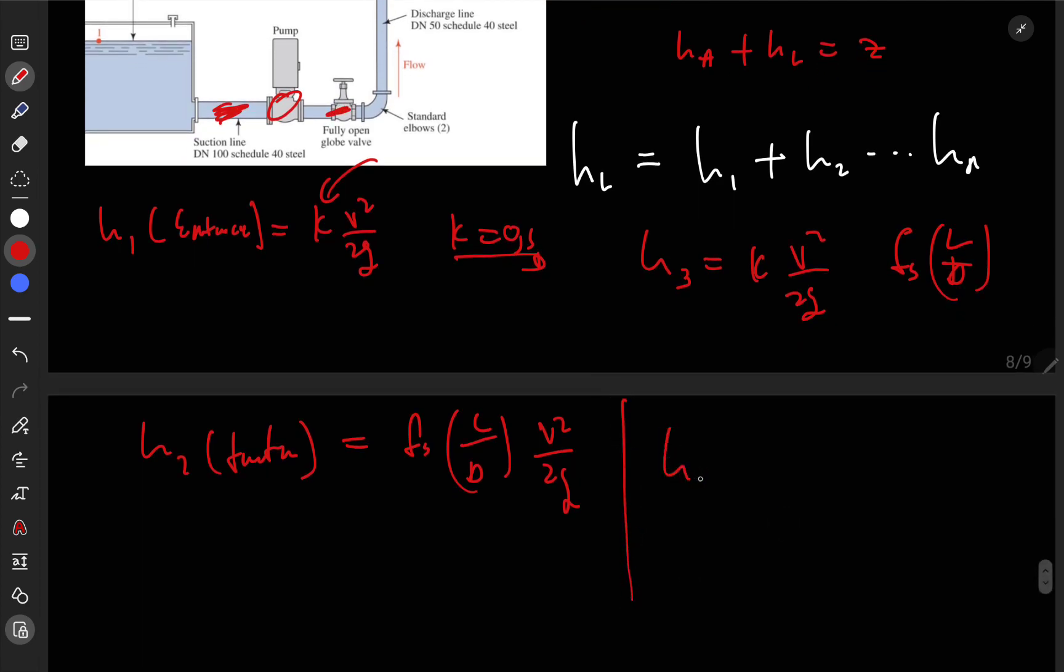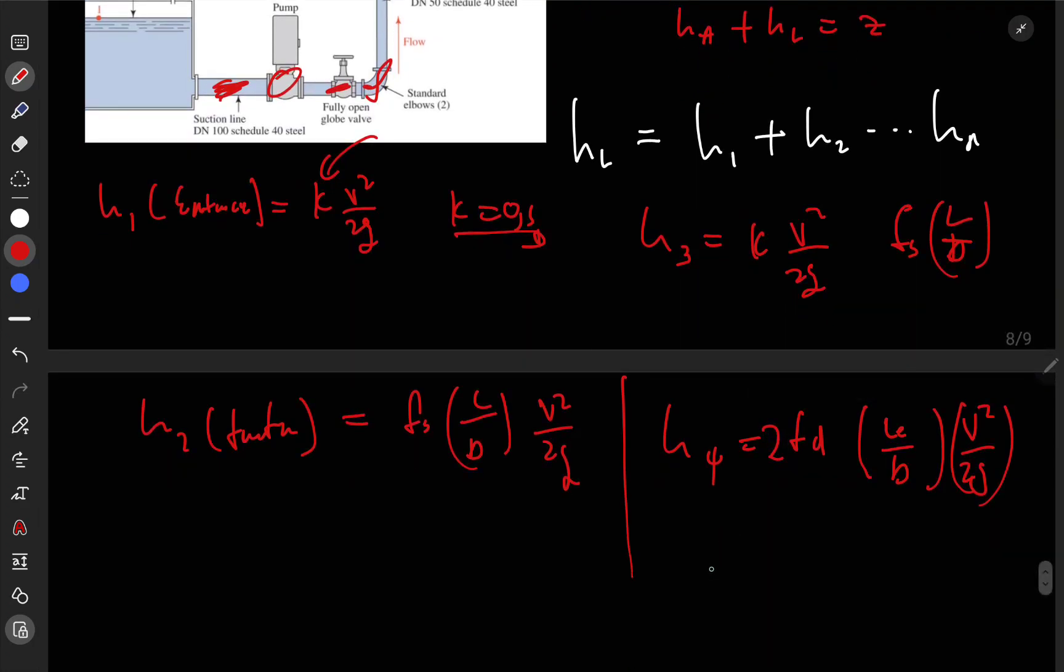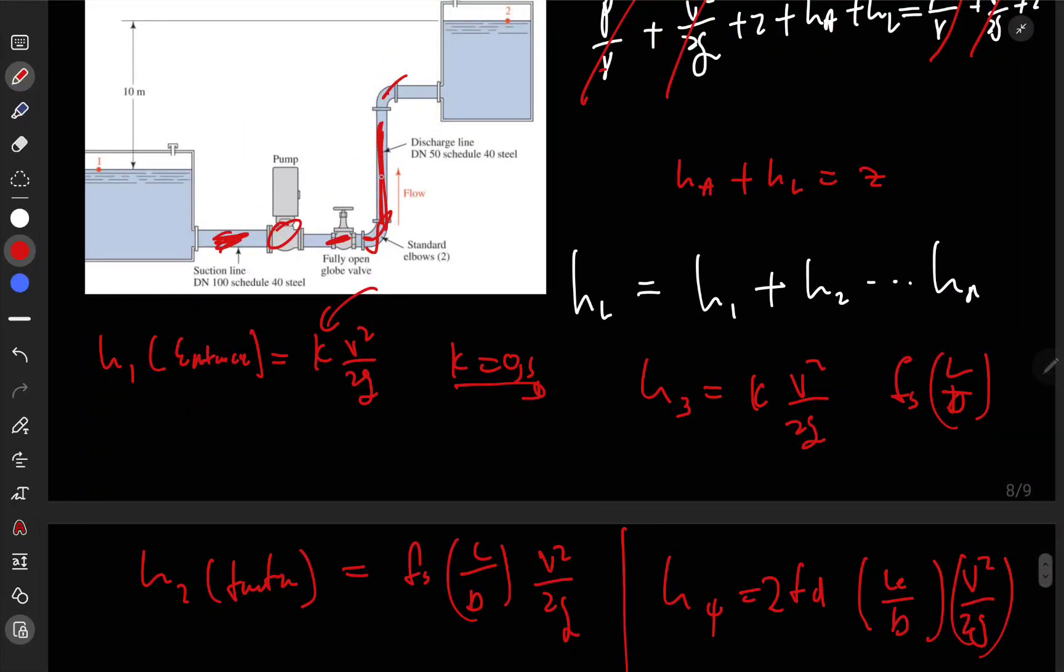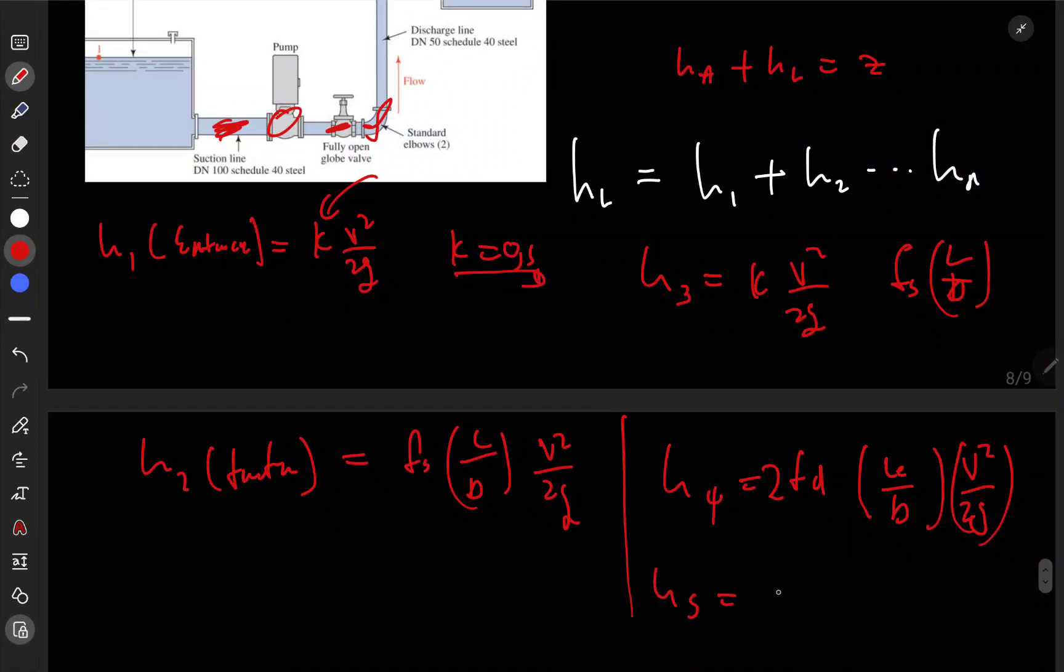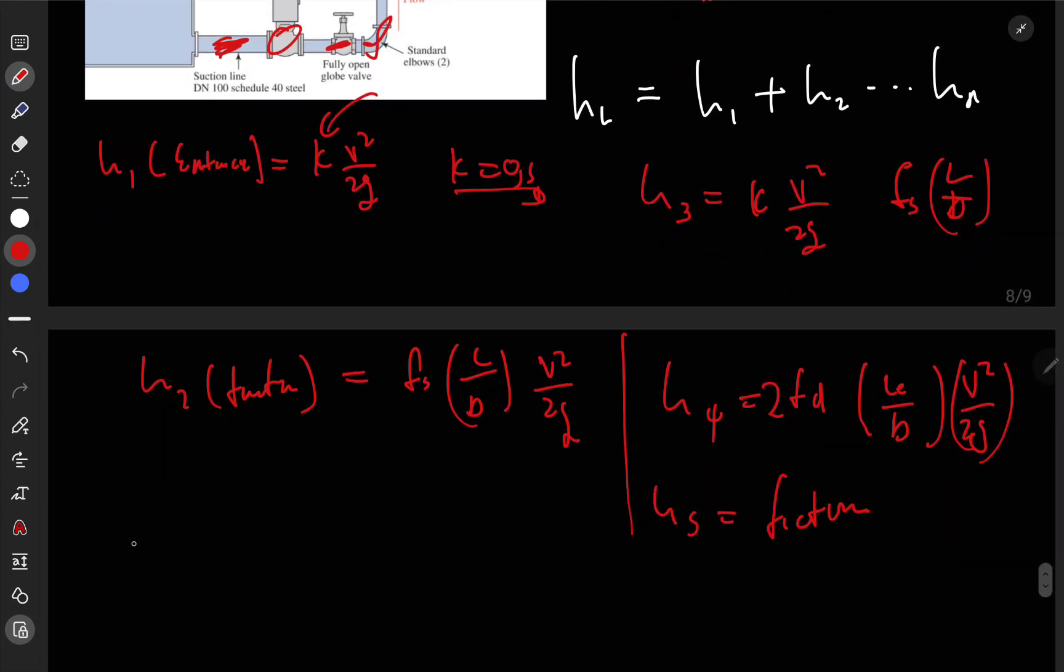Now we arrive here. Here the K for this one is going to be friction factor times L over D, and this one is the equivalent length. Now we are on the elbow. The elbow again is going to be energy loss 4, which equals f_D times L_e over D times V squared over 2g. These elbows are two, so you can do yourself a favor and times it by 2.